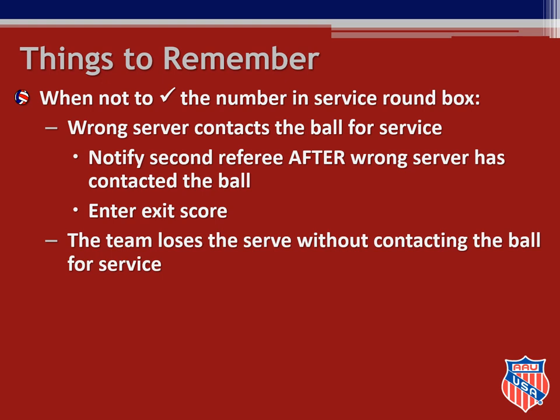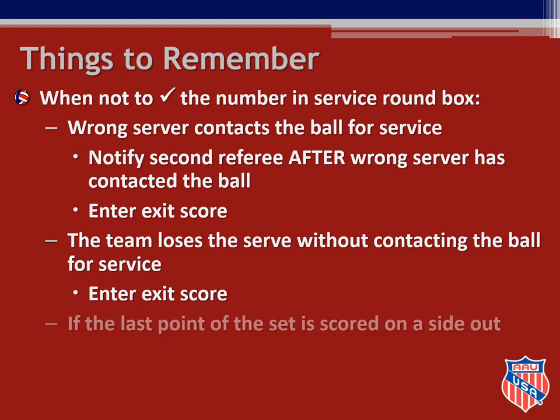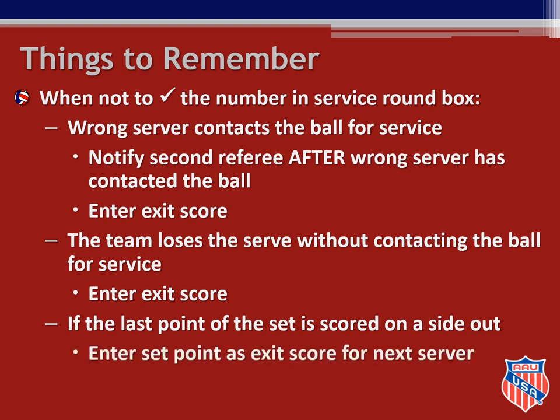While the second referee is putting the players in the correct order, you will enter the exit score in the correct service round box of the player who should have contacted the ball for service. Another example of when you will not check the service rounds box is when a team loses the ball without contacting the ball for service. This can happen when a server does not contact the ball in the time allowed — 8 seconds for players 15 and older and 5 seconds for 14 and under. If the player does not contact the ball, simply enter the exit score in that player's service round box. The third example is when the last point of the set is scored on a side out — in this case you will only enter the set point as the exit score for the server who would have served next for the winning team. Service round boxes are numbered from 1 to 8; for the first rotation of serve you check boxes with number 1, for the second rotation check boxes with number 2, and so forth.